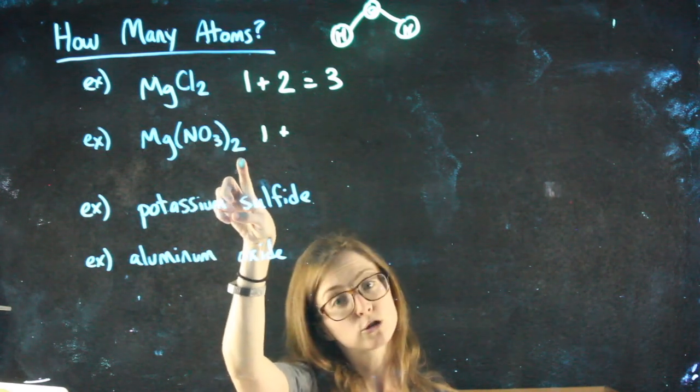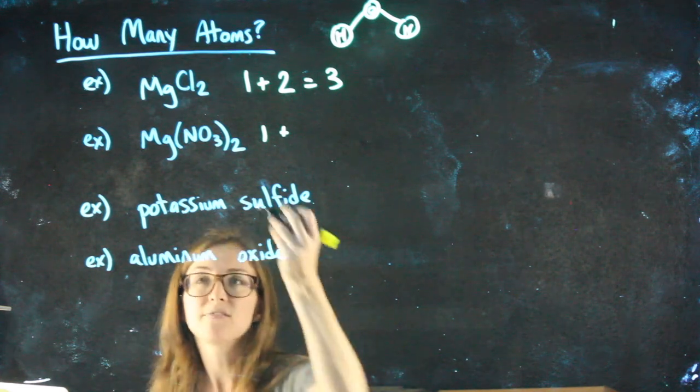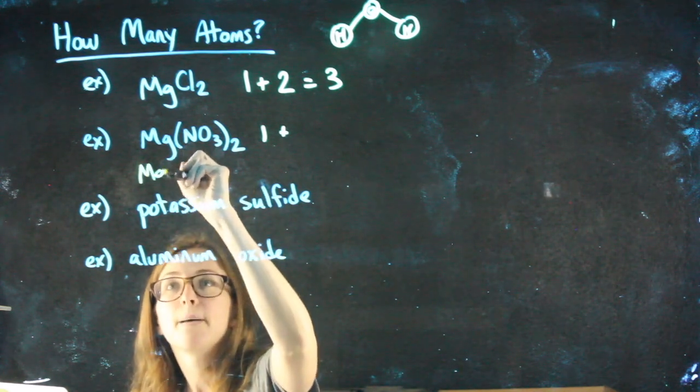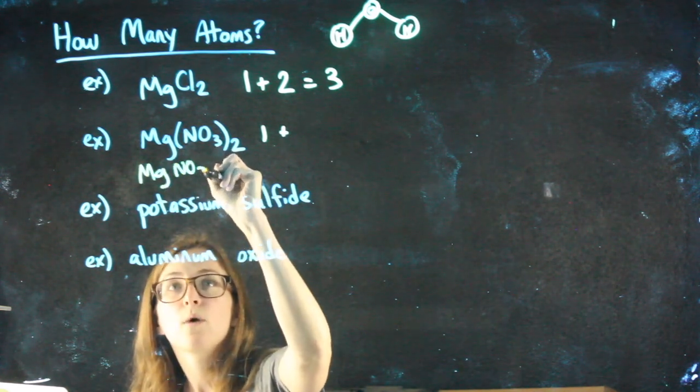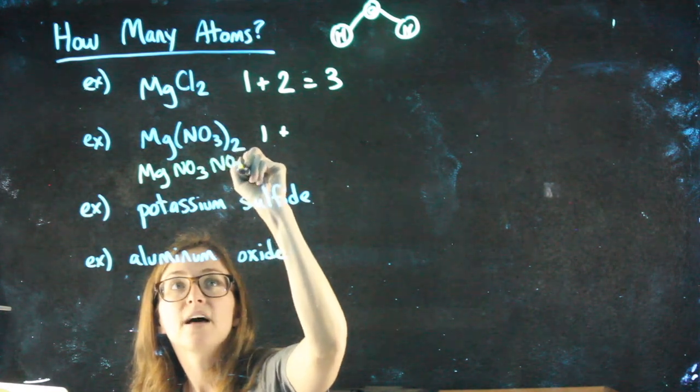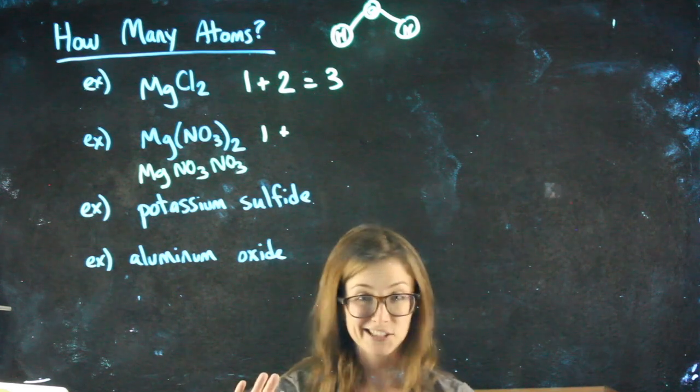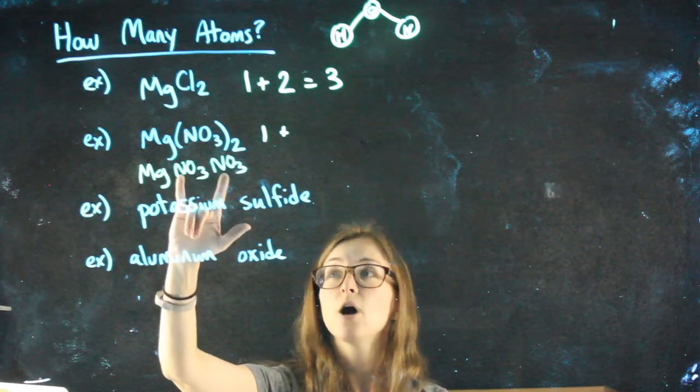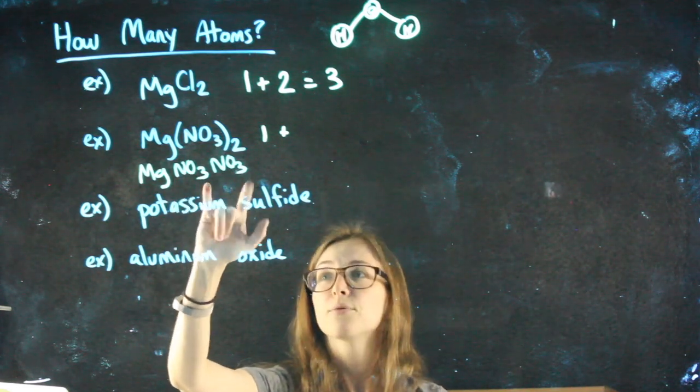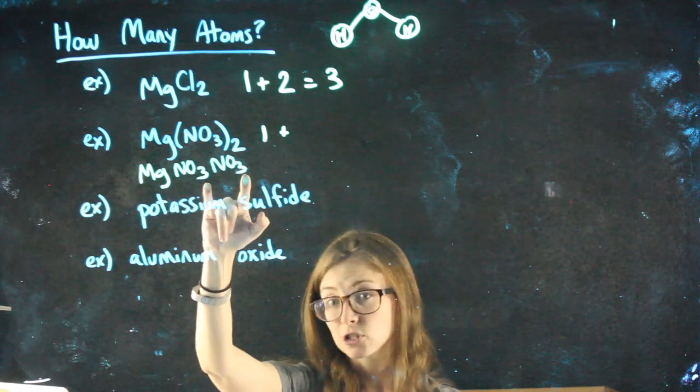We just have two of those groups. So if you want to think of it, we never actually write it this way, but magnesium with a nitrate and another nitrate. So when I write it out like this, which again I would not suggest you doing, but it's easier to see, oh, I have two nitrogens and three plus three, six oxygens.